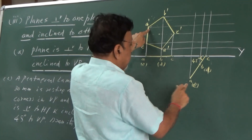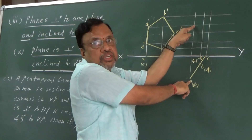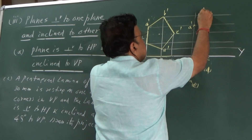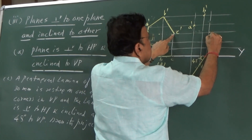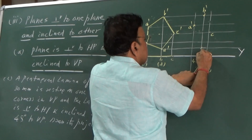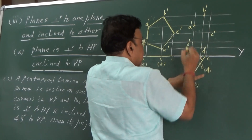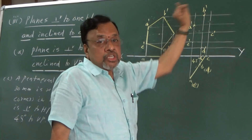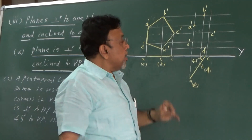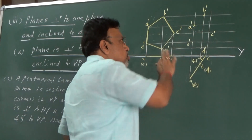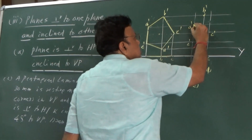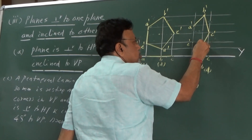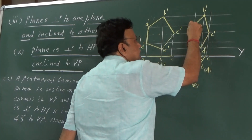Now let us transfer the points. Point A: intersect the A projector from the top view with the A projector from the front view to get A'. Then B projector intersecting B projector gives B'. Similarly, C projector gives C', D projector gives D', and E projector with A projector gives E'. I have now got all the points by intersection of the vertical and horizontal projectors. Now I need to join them — always start from the first point, A. Join them in sequence: A to B, B to C, C to D, D to E, and E back to A.